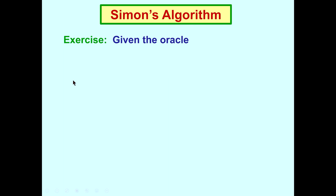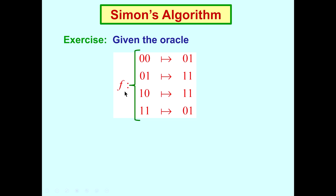And as an exercise, I'd like to give you the following Boolean function with hidden period, and find in the standard basis the 16 by 16 matrix for unitary representation representing U sub f.